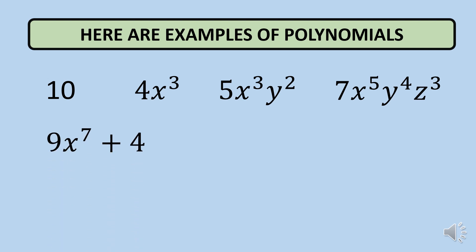Next, we have 9x raised to 7 plus 4. This expression is a polynomial. For the first term, 9x raised to 7, the exponent is positive and it is a whole number. For the second term, it is a constant. Therefore, this expression is a polynomial.